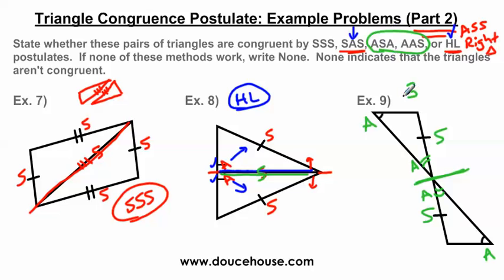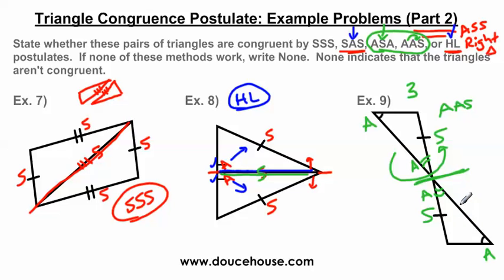Since I have angle-angle-side, it's going to be one of these two: angle-side-angle or angle-angle-side. For angle-side-angle, we need an included side — the side must be directly between the two angles. But the side that's congruent is outside of those two angles, so it's not angle-side-angle. It spells out angle-angle-side because the side is not included between the two angles. The same is true on the other triangle. So I can prove these triangles are congruent by the angle-angle-side postulate.